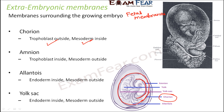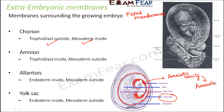Next is amnion. Amnion is located internal to the chorion — it is the membrane immediately surrounding the embryo. The space between the amnion and the embryo is known as the amniotic cavity.